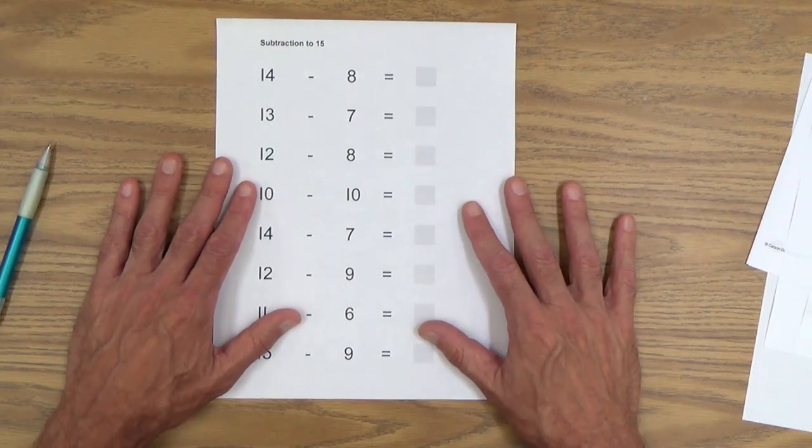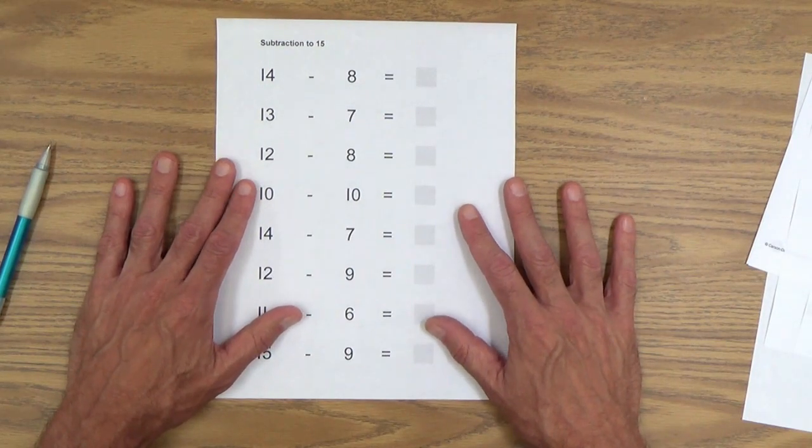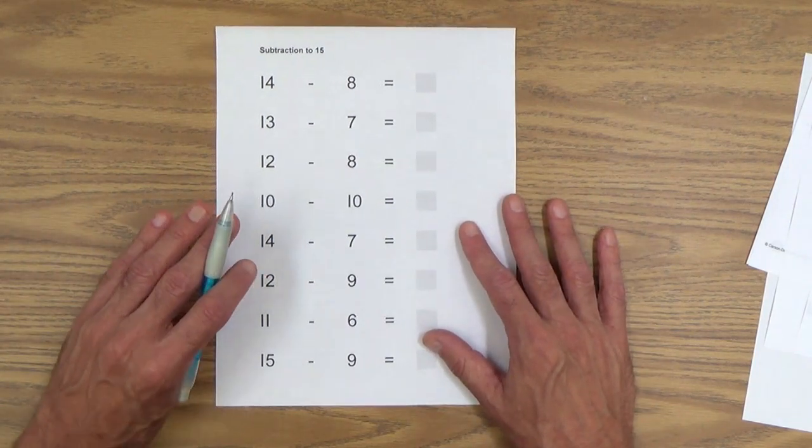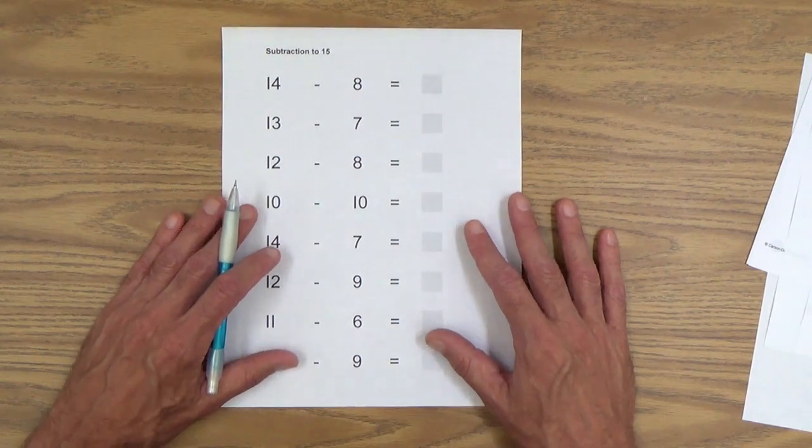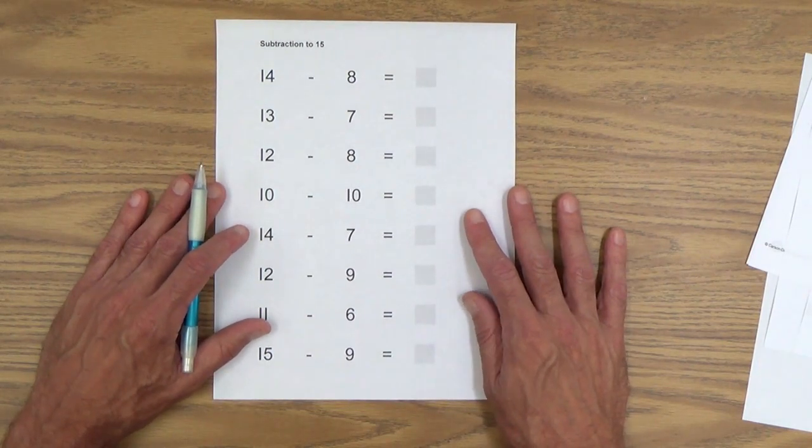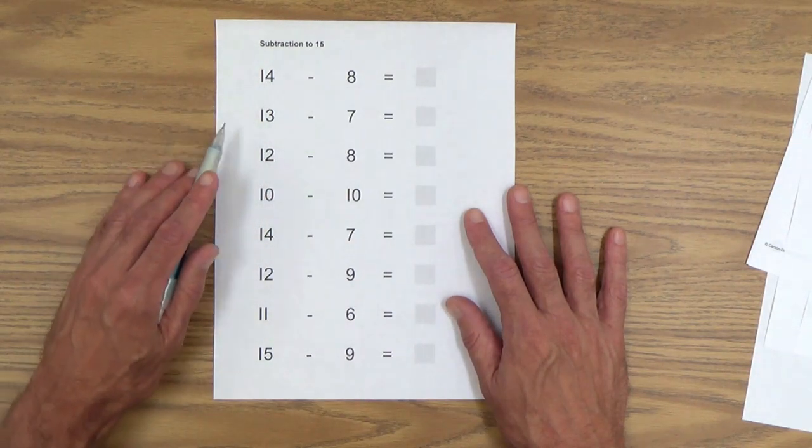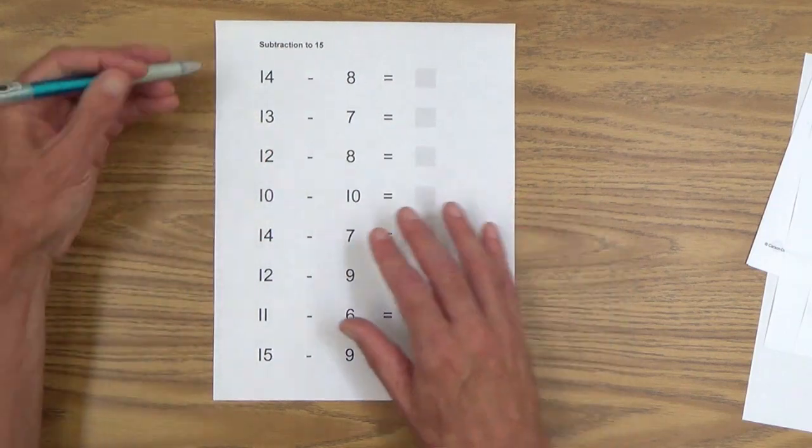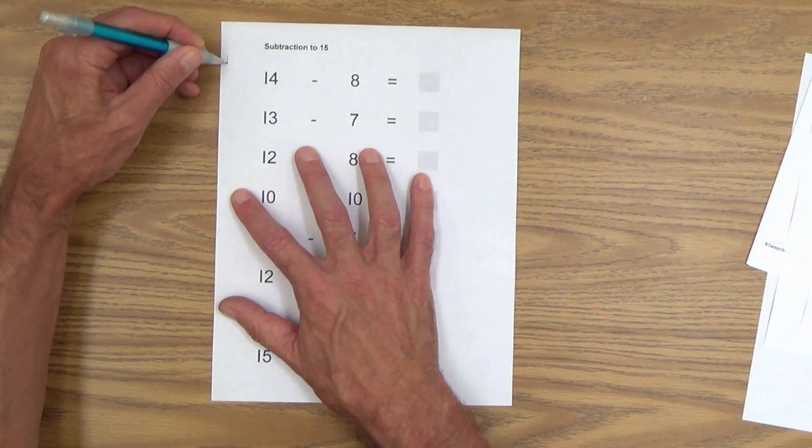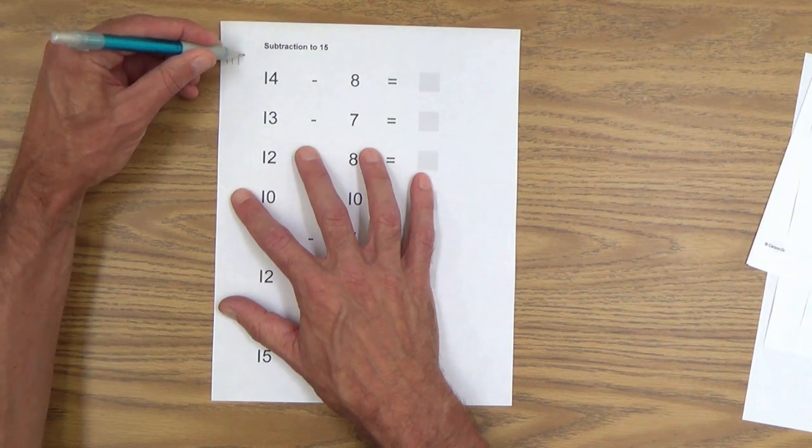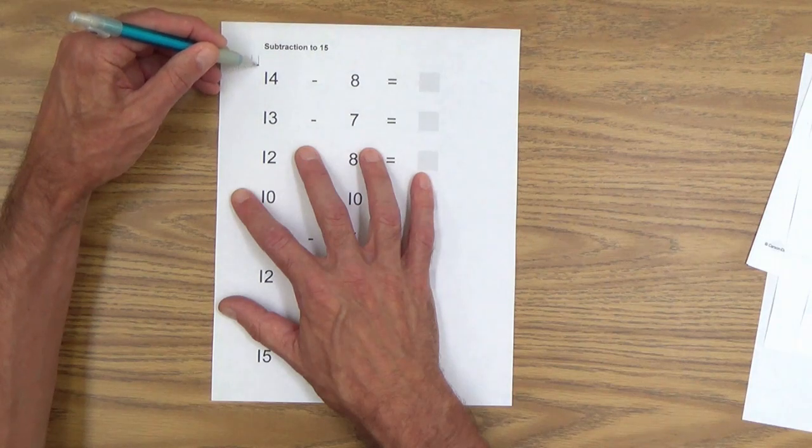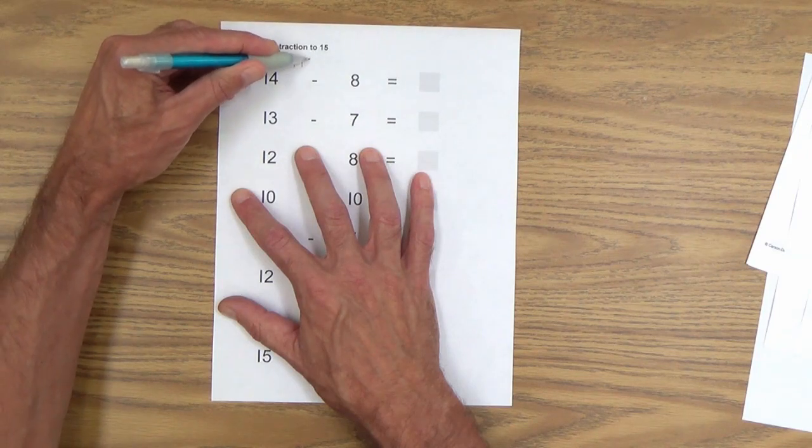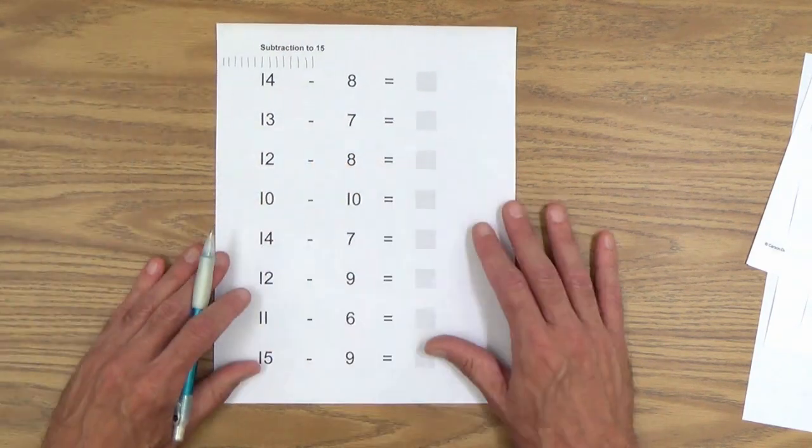Here's the procedure. We've already done this with 10, and now we're just working with larger numbers. Because we are working with larger numbers, your child is going to have to be extremely neat to solve these problems. As you can see, the large number there, the minuend, is 14. So here we go: 1, 2, 3, 4, 5, 6, 7, 8, 9, 10, 11, 12, 13, 14. That's lots of tally marks.